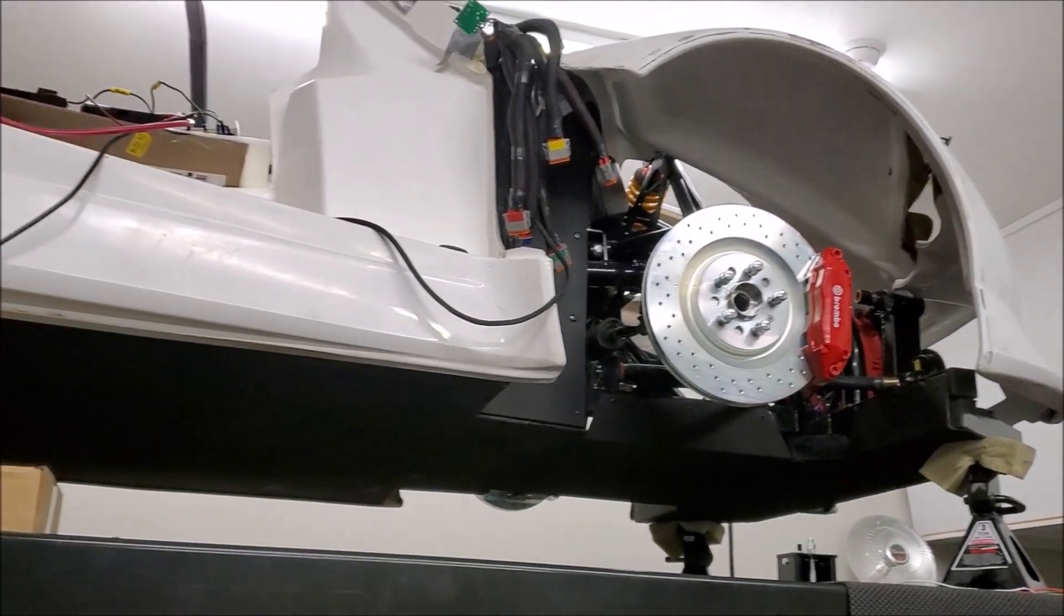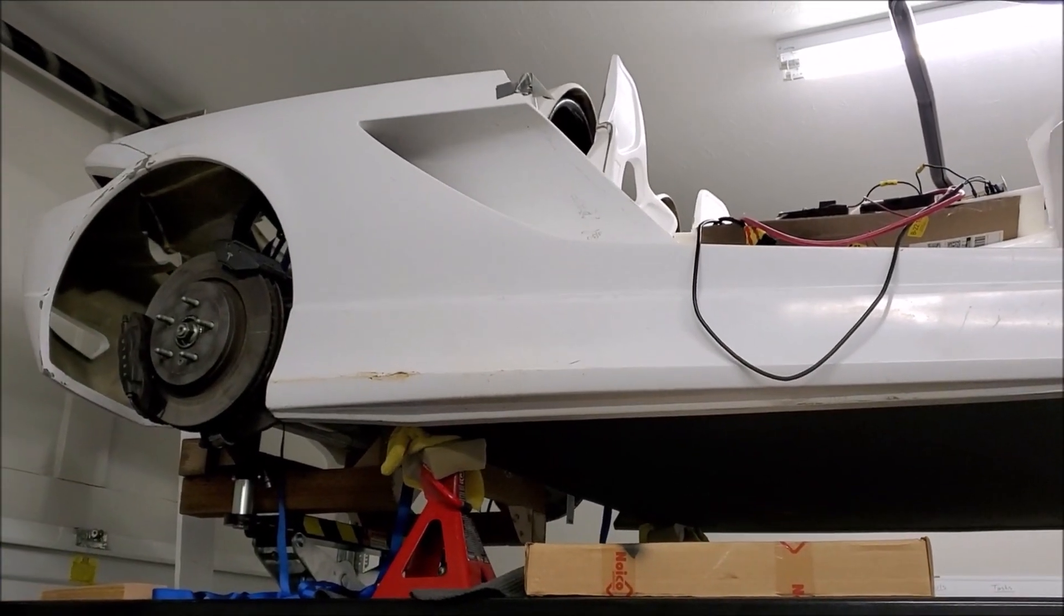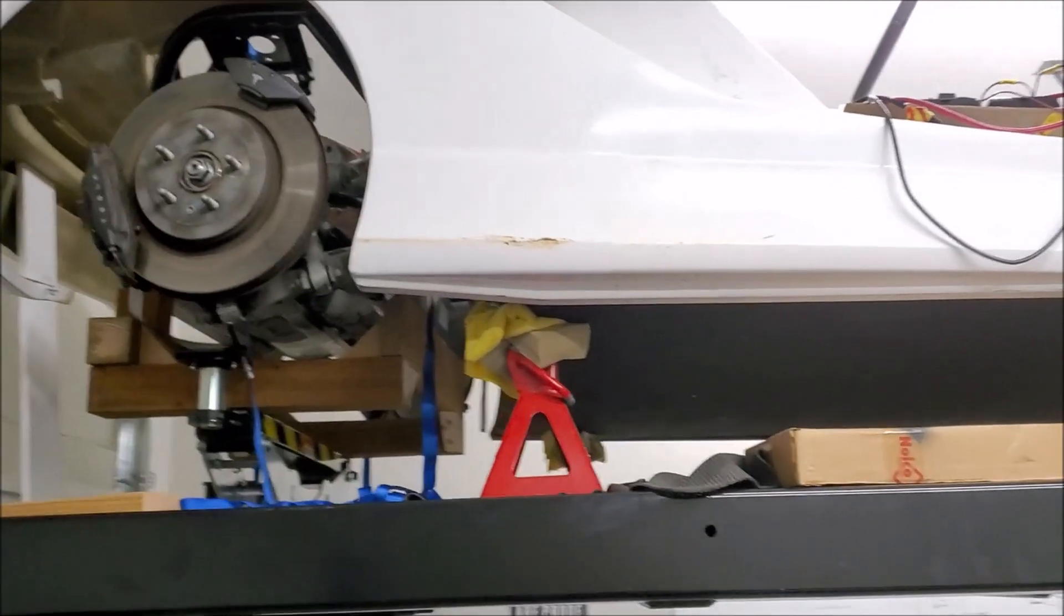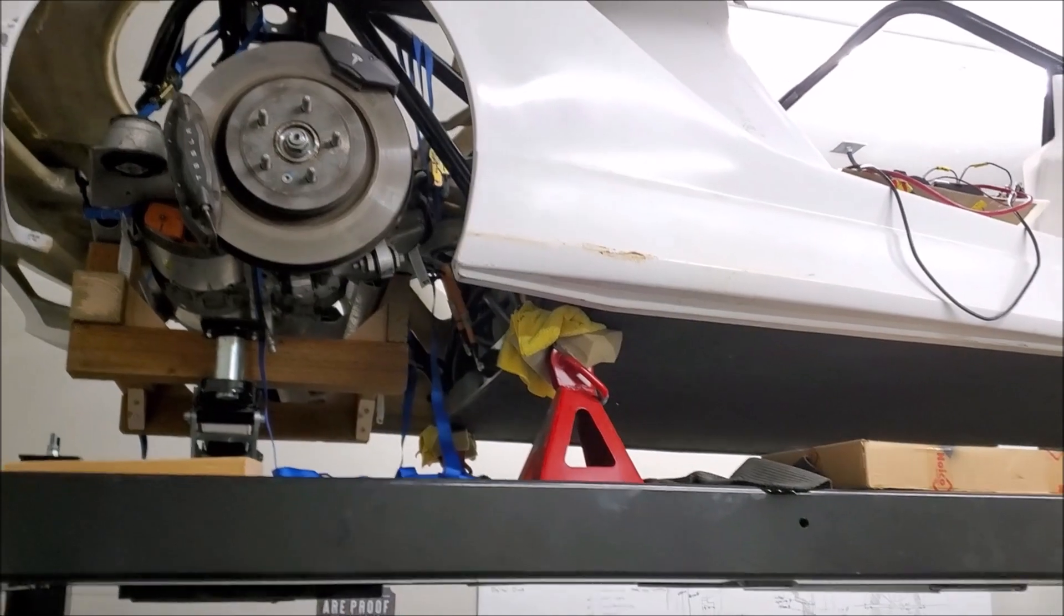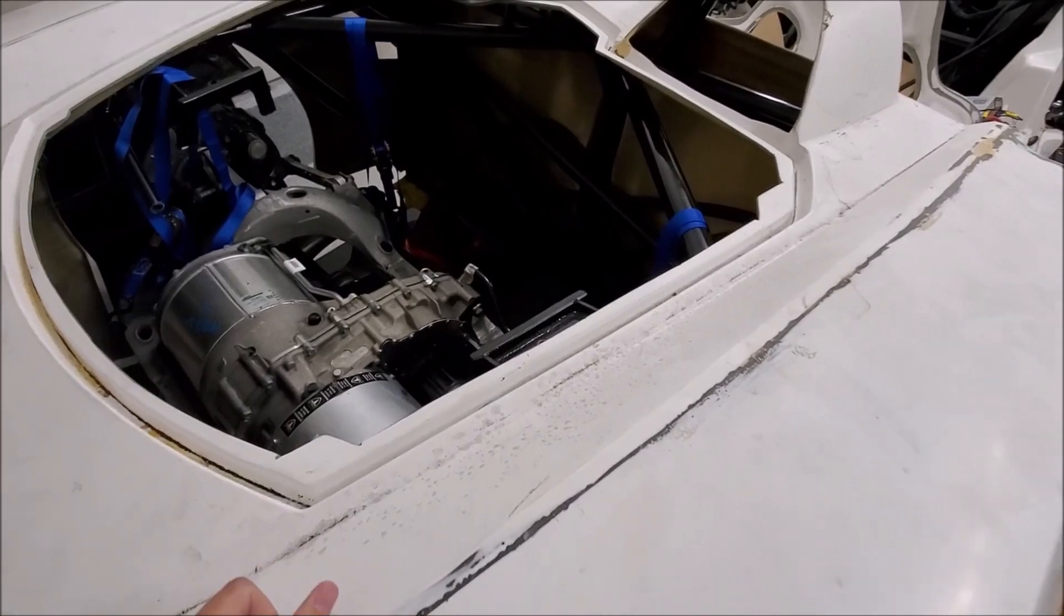I definitely want to put some up front for weight distribution. These side rails are all empty so that might be a good spot, and behind the seats between them and the Tesla motor there's quite a bit of space as well.